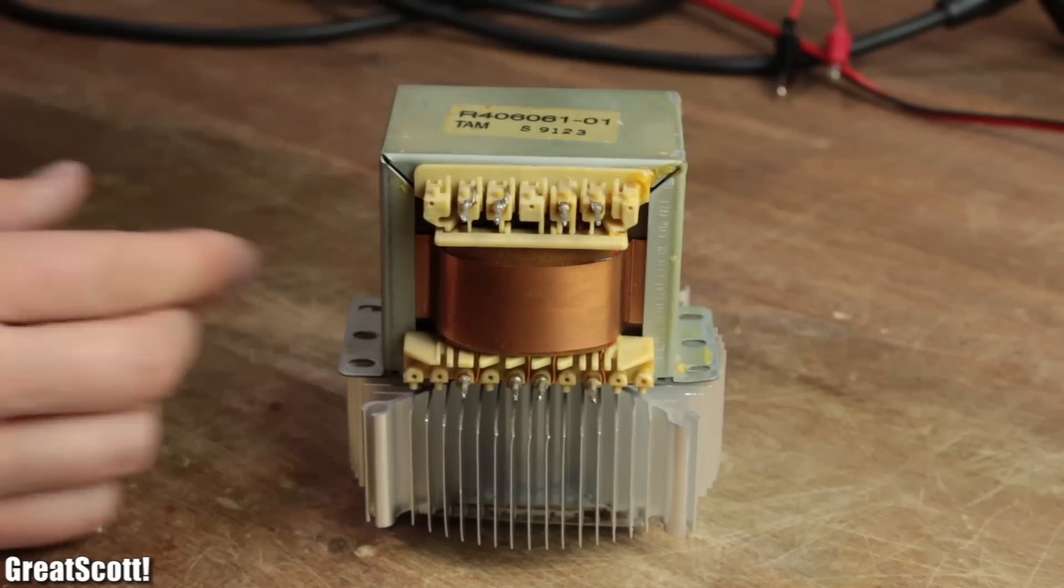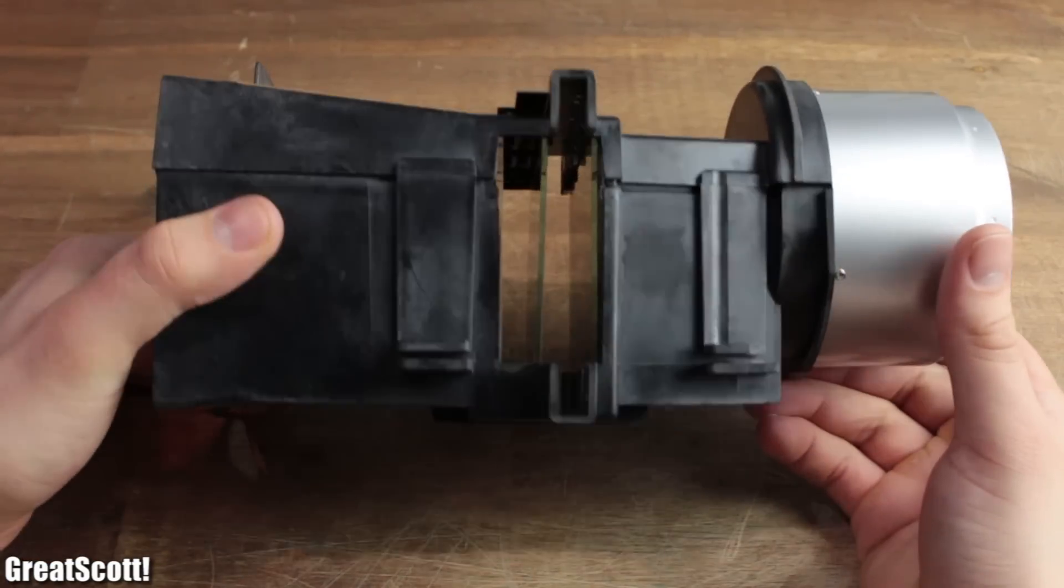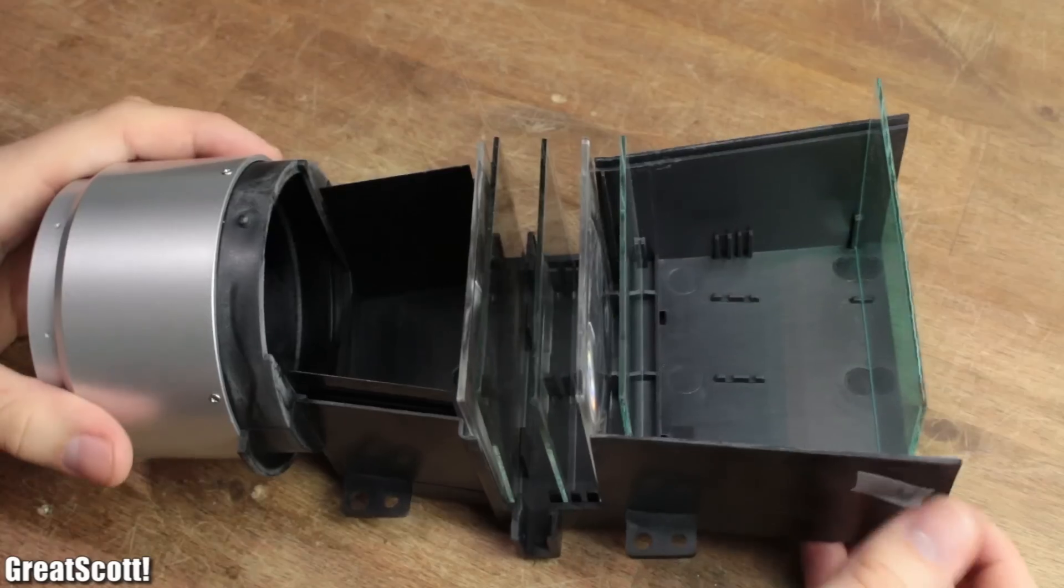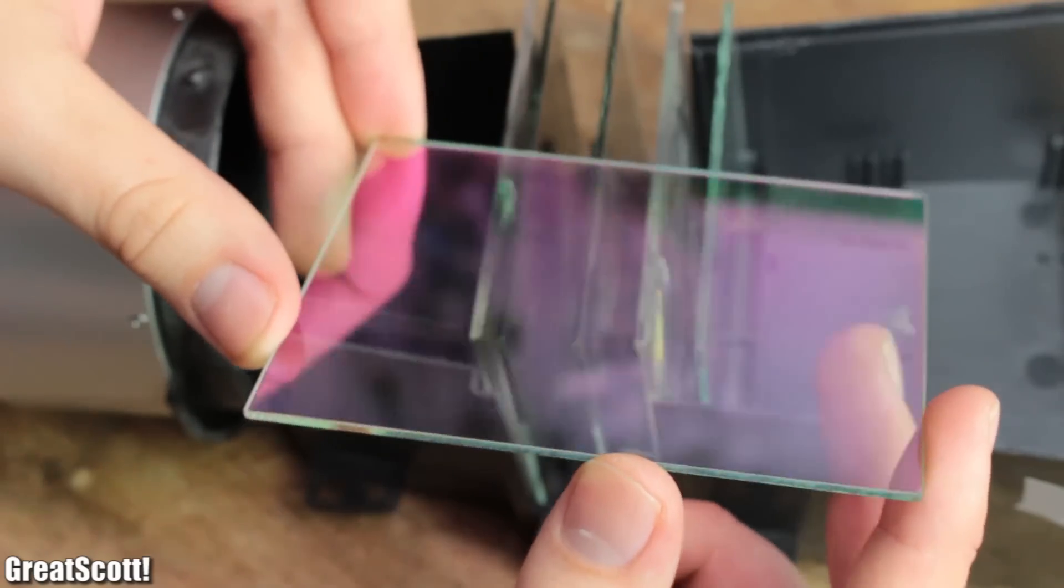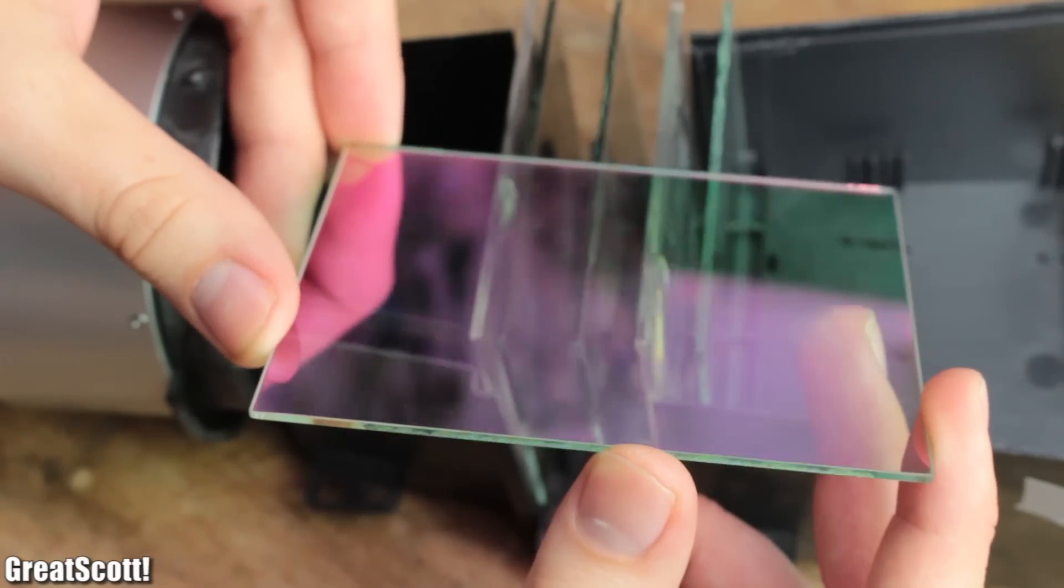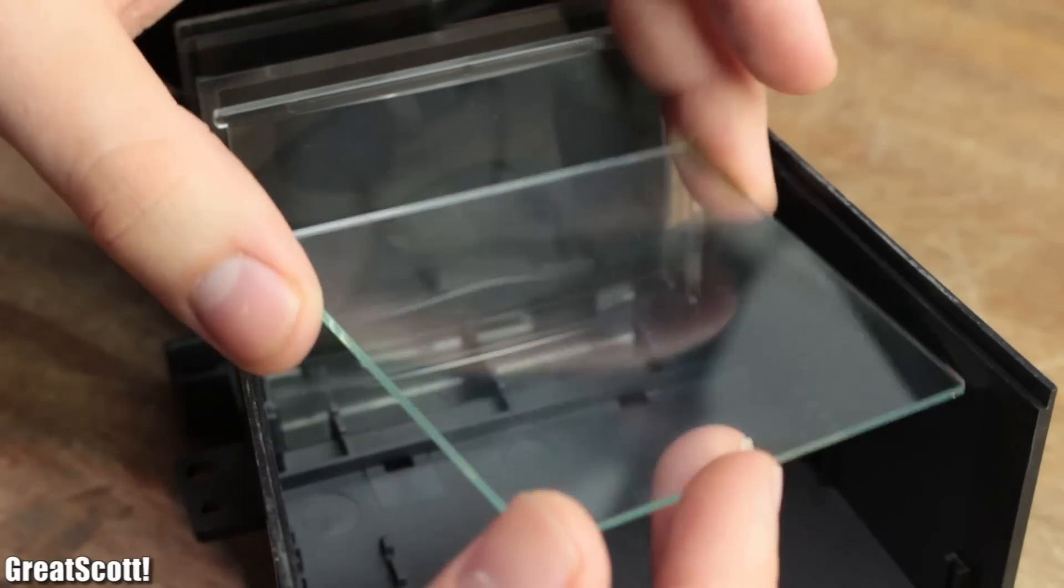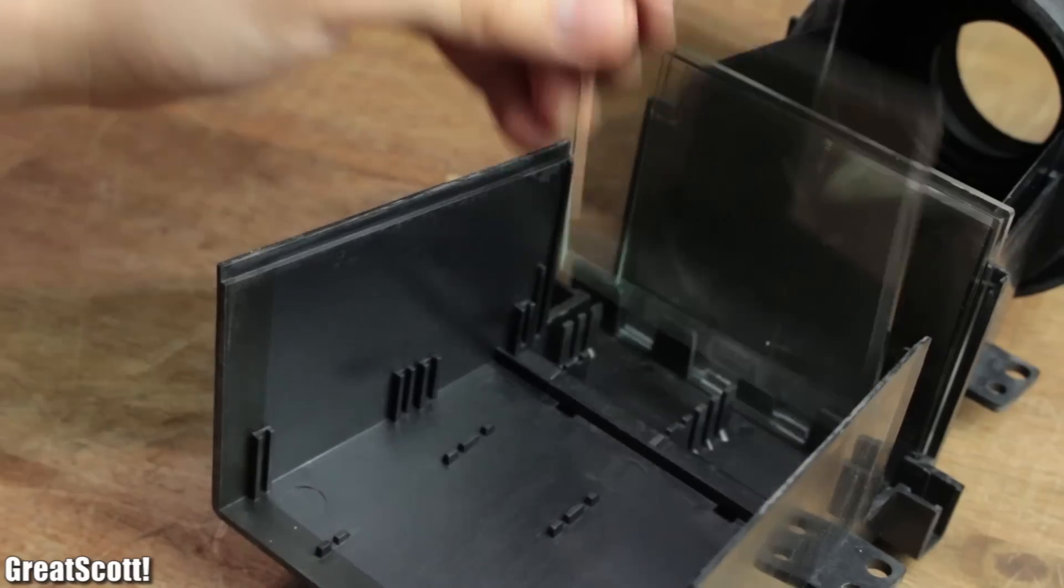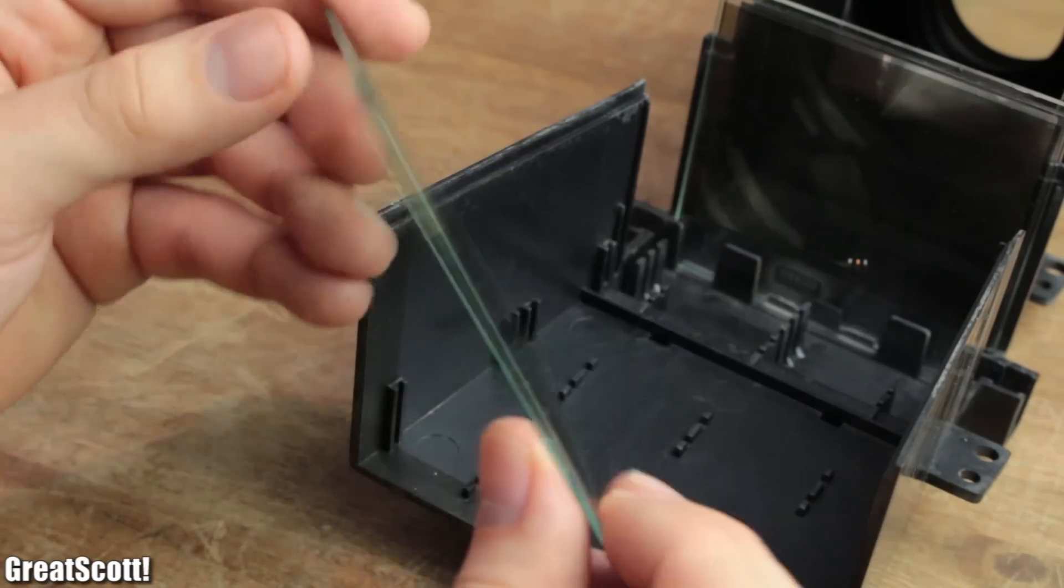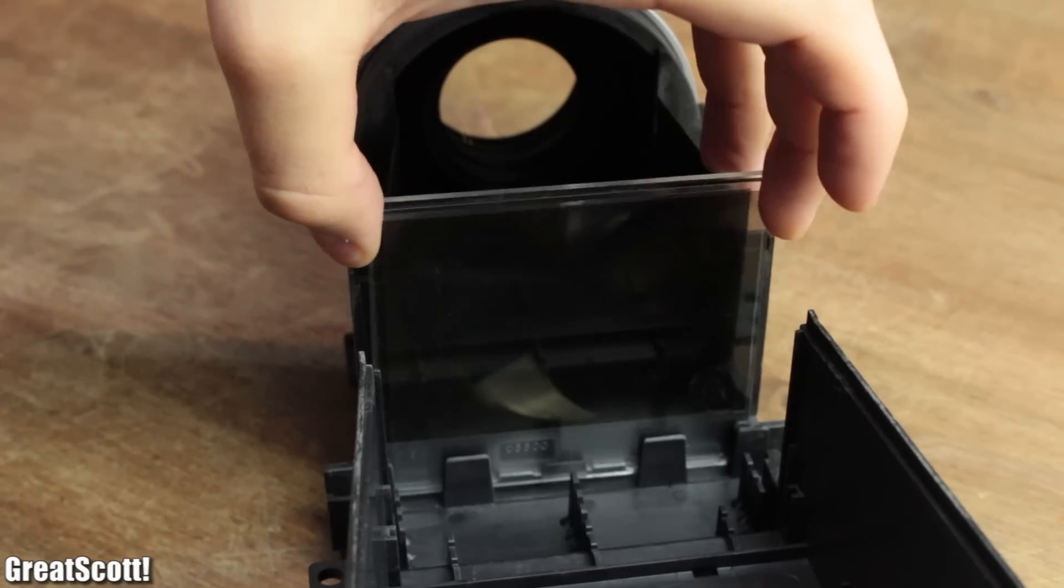While that is drying, let's have a look at a real life projector example. After cracking it open we can see the first glass layer the light passes through which apparently filters out a couple of wavelengths. Next is a simple piece of glass followed by a plastic lens which can turn my footage into a trippy experience. Then we got a polarization filter in front of the LCD and another one behind it.